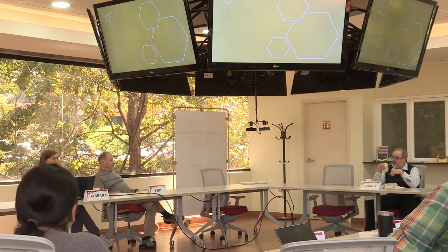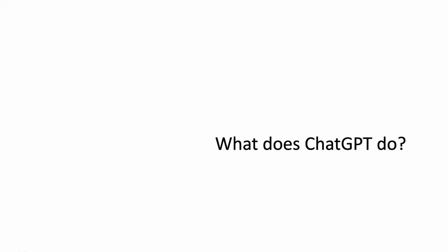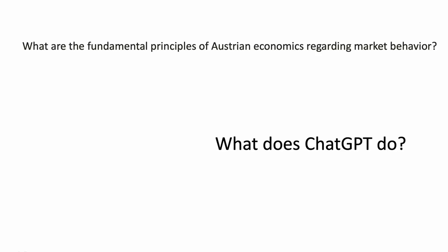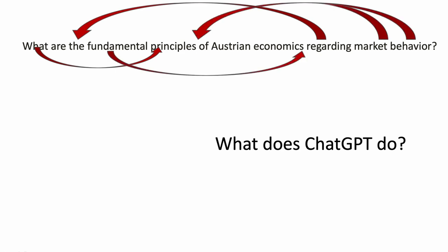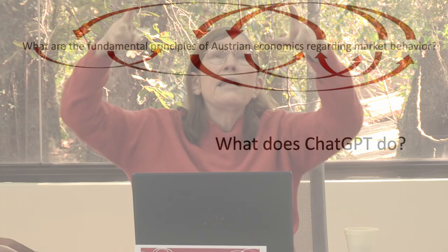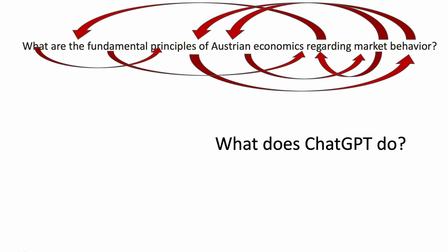I know all of you have heard of ChatGPT and maybe have a little sense of what it does. Let's step back and look at what ChatGPT actually does. So let's say you have a question like: 'What are the fundamental principles of Austrian economics regarding market behavior?' Well, what ChatGPT is doing is asking how do all these words in this sentence relate to one another, and more than that, what do we know about Austrian economics — how do all those words and concepts relate to what I'm asking?